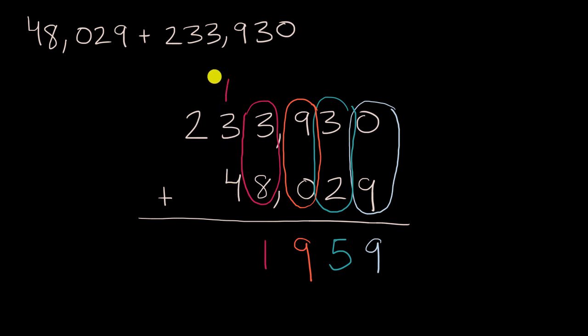And now, so we have one 10,000 plus three 10,000s plus four 10,000s. So one plus three plus four. That's eight 10,000s or 80,000. And then last but not least, we have these 200,000s right over there. And we're done. Two hundred eighty one thousand nine hundred and fifty nine. Did you get the same answer?